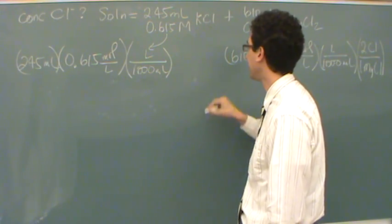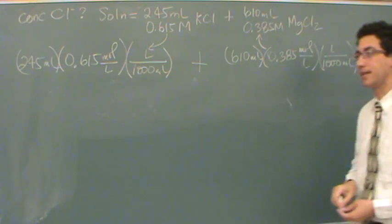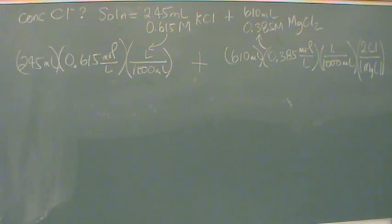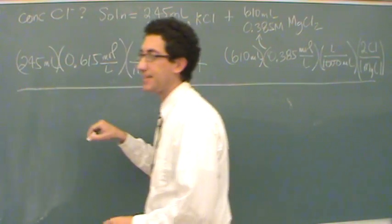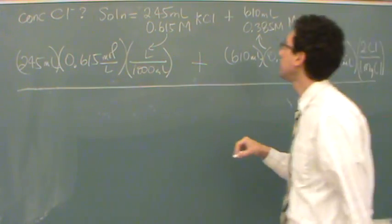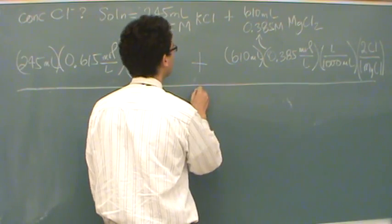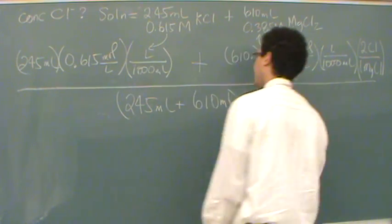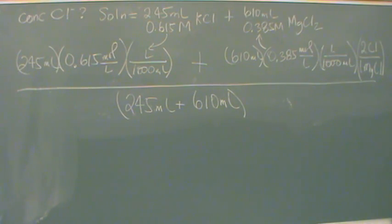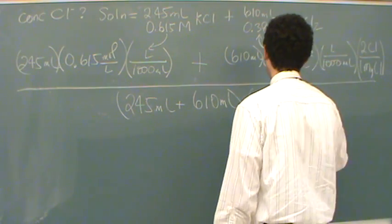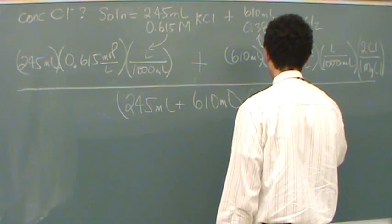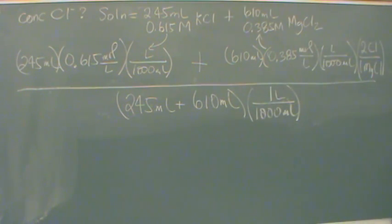Here we just did this intuitively — there's one Cl in every KCl, so you could write that down too. Now I'm going to add these two together to get the total moles of chlorine in solution from each source, the KCl and MgCl₂. Then I'll divide by the total volume, which is 245 milliliters plus 610 milliliters, and convert to liters since molarity requires dividing by liters. You don't have to do this all in one step, but this would be the essential calculation.